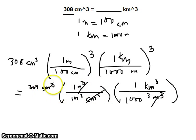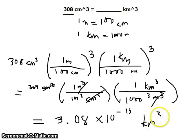What is left is the unit in cubic kilometers. And then we only have two significant figures given, so our answer would just be two significant figures. That is 3.08 times 10 to the negative 13 cubic kilometers, and that's the final answer.